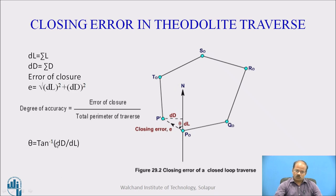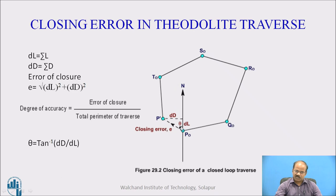The angular position of the closing error is given by θ = tan⁻¹(ΔD / ΔL), or θ = tan⁻¹(ΣD / ΣL). This gives us the angle in the quadrantal system and indicates which quadrant the closing error falls in.